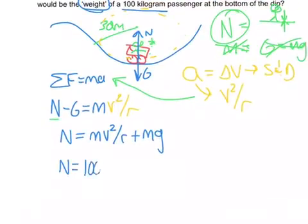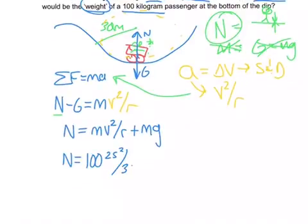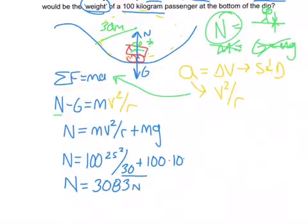This person is 100 kilograms going 25 meters per second. The radius is 30 meters plus, again, the mass is 100 kilograms, and then we use 10 meters per second squared to make it a little bit easier for gravity. And we get 3,083 newtons as the normal force or the weight.